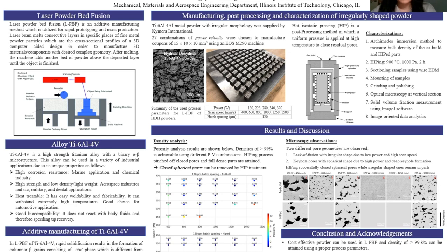We had different combinations of laser power and scan speed to make coupons. To replicate the experiment, we printed at least two samples for each power-velocity combination. In order to study how porosity can be affected by post-processing such as hot isostatic pressing, we HIPped the printed part to see how we can close porosity to improve strength and bulk density. HIP is a method to apply a uniform pressure at high temperature to close residual pores.